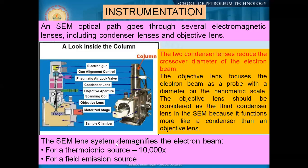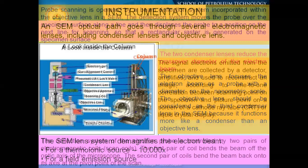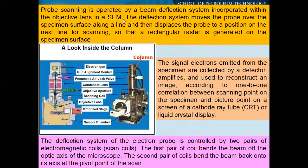We can use two types of sources — one is a thermionic source and one is a field emission source — for generating the electron beam. Probe scanning is operated by a beam deflection system incorporated into the objective lens of the SEM. The deflection system moves the probe over the specimen surface. We put the specimen in the specimen chamber, and we can also move the specimen.